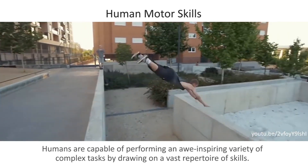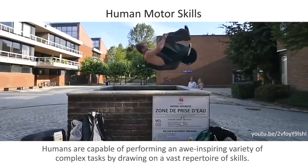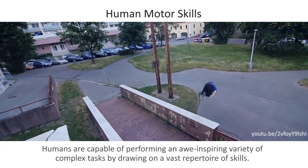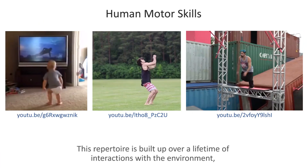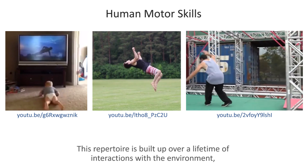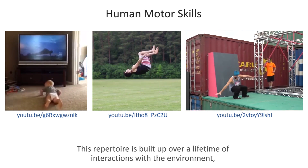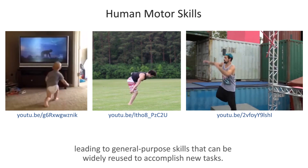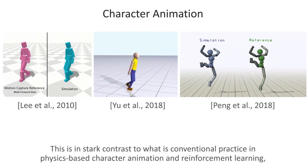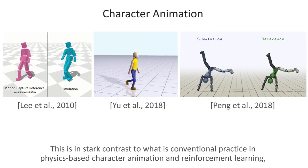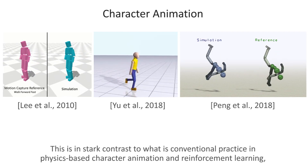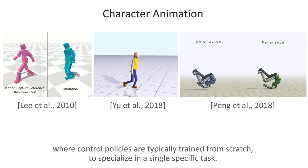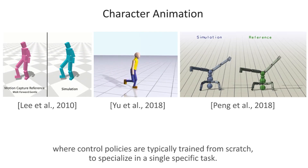Humans are capable of performing an awe-inspiring variety of complex tasks by drawing on a vast repertoire of skills. This repertoire is built up over a lifetime of interactions with the environment, leading to general-purpose skills that can be widely reused to accomplish new tasks. This is in stark contrast to conventional practice in physics-based character animation and reinforcement learning, where control policies are typically trained from scratch to specialize in a single specific task.